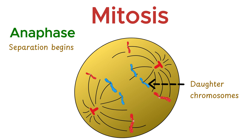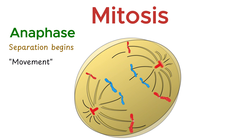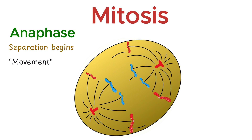Anaphase is all about movement. It's a very quick but crucial stage where the genetic material is equally divided. The cell elongates slightly as the chromosomes move farther apart, getting ready for the final steps of division.